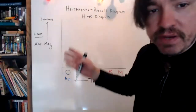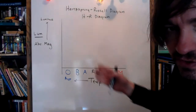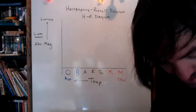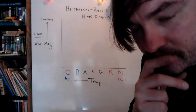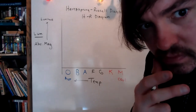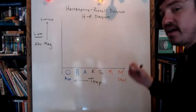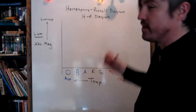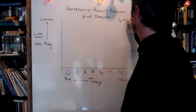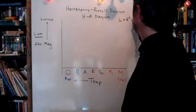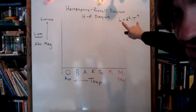Do you expect there to be a relationship between the luminosity of a star and its temperature? Yes — why? Because of the Stefan-Boltzmann law for stars: the luminosity of a star is proportional to the radius squared times the temperature to the fourth power. That's why I had to talk to you about that before I could tell you this graph.